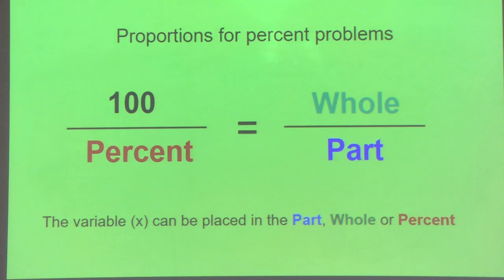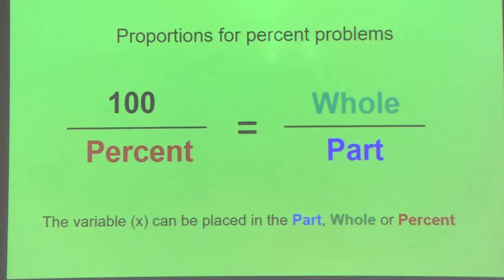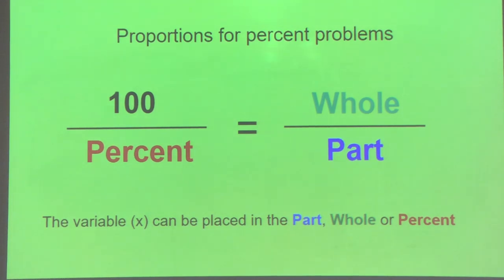Proportions for percent problems will look like this. We've been in our proportions unit, so you've already seen items that look somewhat like this. When we talk about proportions, we're talking about setting two fractions equal to one another. Today, as we deal with the percent proportion, you're going to be dealing with three primary aspects: the percent, the whole, and the part.